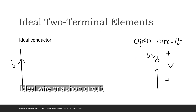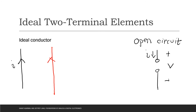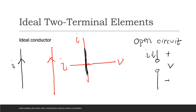An ideal conductor or ideal wire has zero resistance and is drawn simply as a straight line. Any amount of current can flow through it without any loss of voltage or power. In the V-I graph, the ideal wire's relation is a vertical line along the current axis, meaning it has no voltage drop but carries a constant current I.